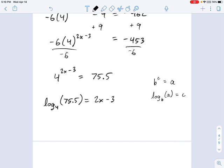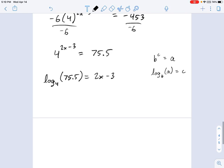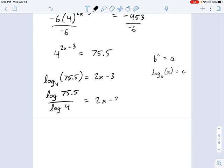And at this point you can probably see why this said to use a calculator. There's no way you're doing log base 4 of 75.5 without a calculator. And some calculators can just grind through this as it's written. Many cannot. So you need to know how to use the change of base formula. It's not hard. You just say log of 75.5 divided by log of 4. That's what 2x minus 3 is going to be equal to.